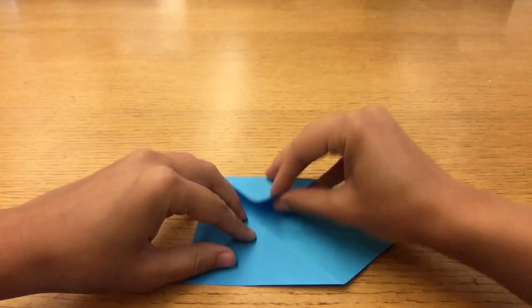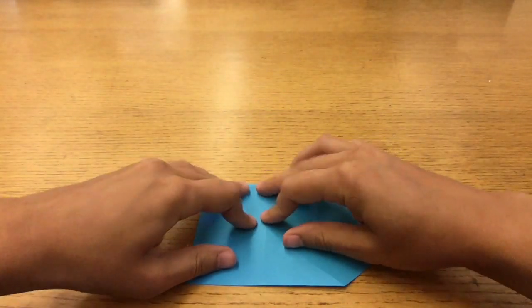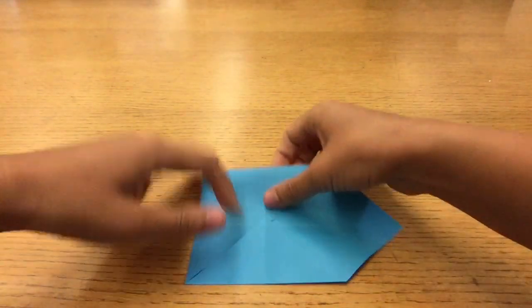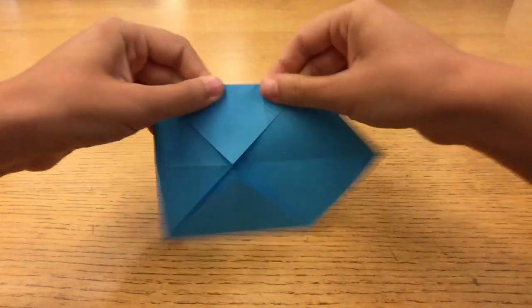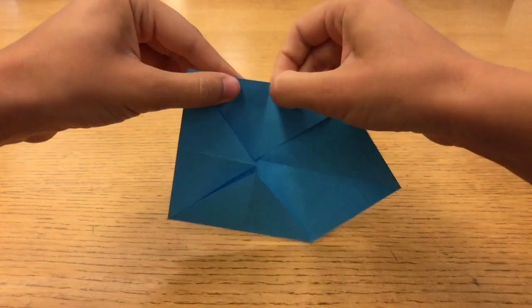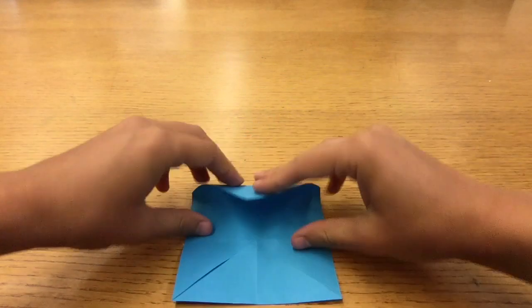Each time you fold the corner over, you are dividing the area of the larger triangles in half. So when you've folded all four corners over, your square will be half the size that it was before.